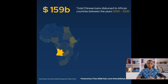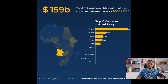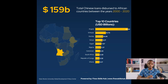Angola is obviously in a very comfortable — or uncomfortable — lead. The areas highlighted in yellow are the countries that have benefited. On the right are the top 10 countries that benefited from Chinese loans over this period: Angola at 42.6 billion, followed by Ethiopia, Zambia, Kenya, Egypt, Nigeria, Cameroon, South Africa, Republic of Congo, and Ghana.